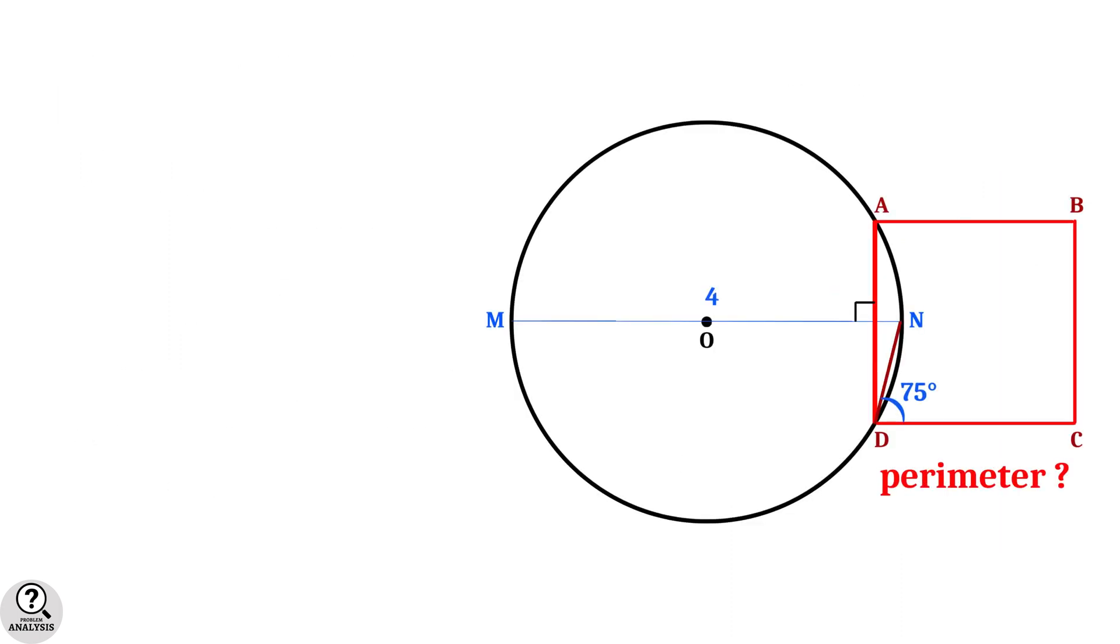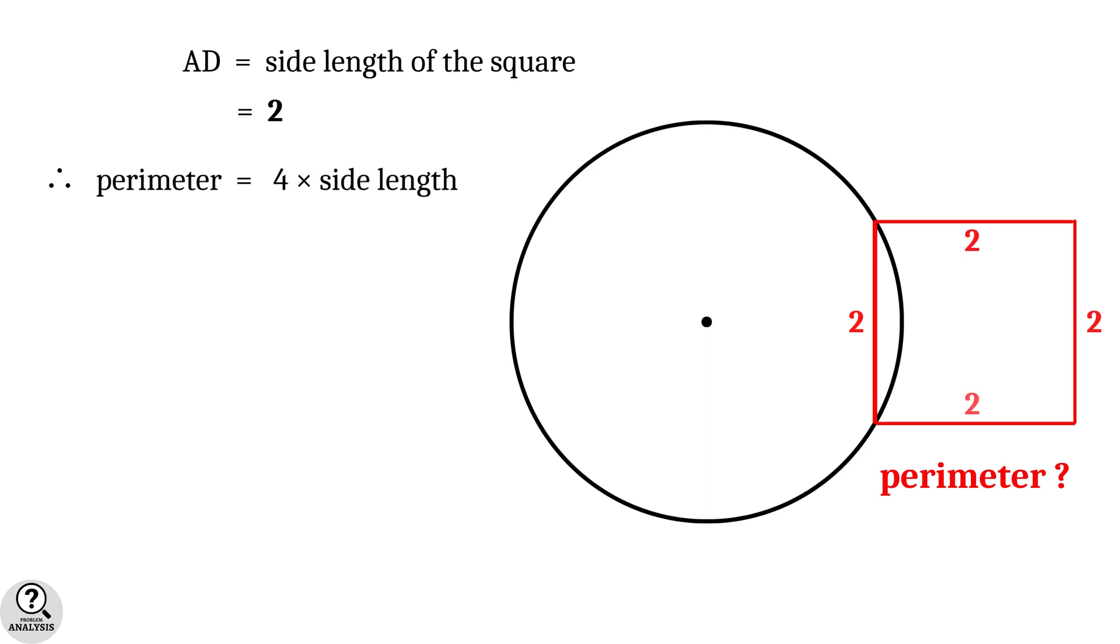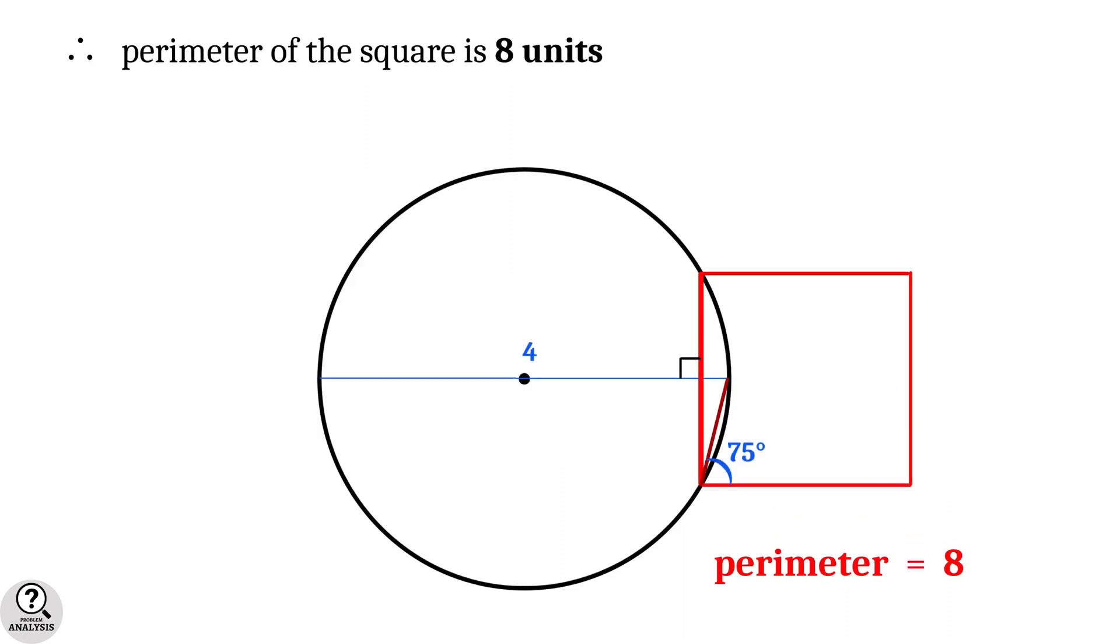Now everything is done. We have AD is the side length of the square, which we got 2 units. Therefore, perimeter is equal to 4 times side length equal to 4 times 2 equal to 8 units. That is, the perimeter of the square is equal to 8 units. And that is the solution we are looking for.